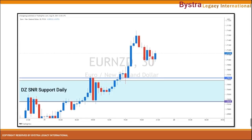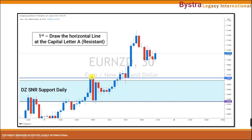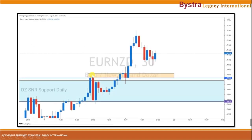What we do now is mark the horizontal line at capital letter A — this will be our resistance. Next, we need to draw the zone. How to draw the zone is the rally-base-rally method. We draw the base, and this is our entry base rally. So once we have the horizontal line and the entry base, we proceed to the next step.